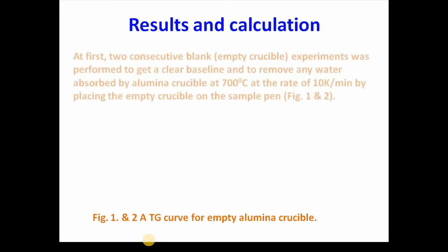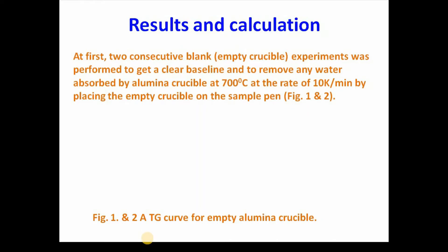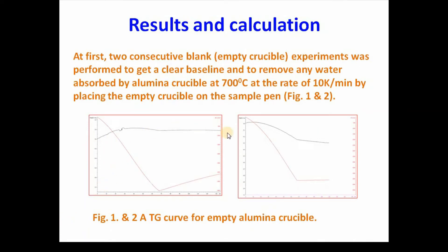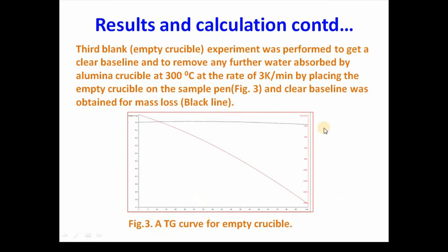Result and calculation: At first, two consecutive blank experiments were performed and the results have been shown here — the TGA curve for the empty aluminum crucible. Then a third blank experiment with the empty crucible was performed to get a clear baseline and to remove any further water absorbed by the alumina crucible, at 300 degrees Celsius at the rate of 3 K per minute by placing the empty crucible on the sample pan. As shown here, a clear baseline was found.